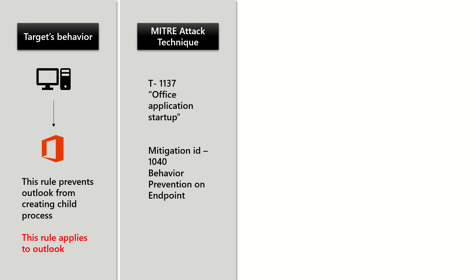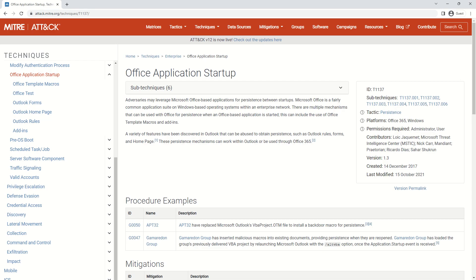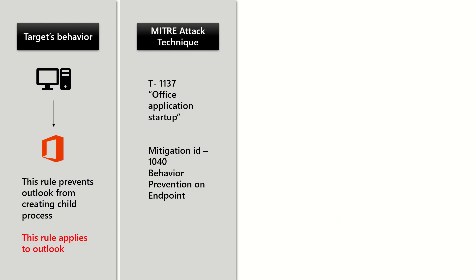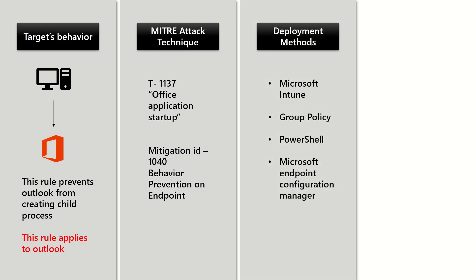The mitigation ID is M1040. You can read the documentation — the link will be available in the description. From a deployment standpoint, Microsoft Intune, Group Policy, PowerShell, and Microsoft Endpoint Configuration Manager can be used to deploy this rule.